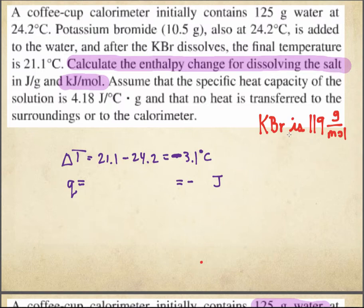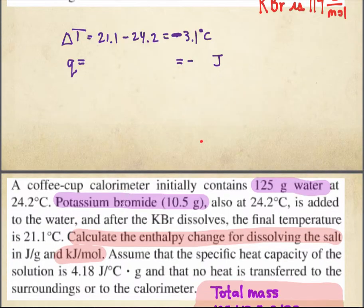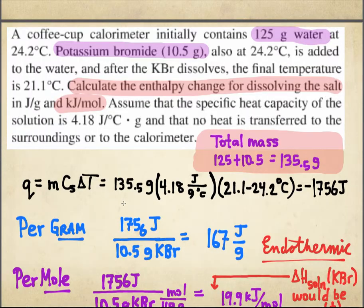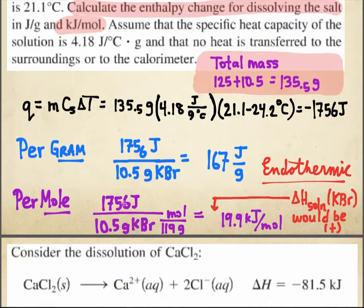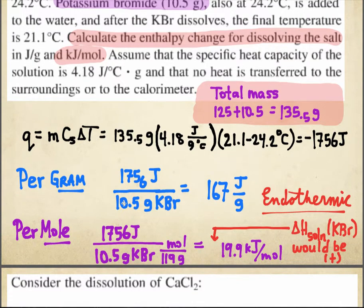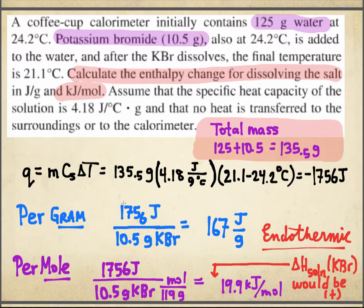But probably even more important than that, I'm going to have to use that Q equals M times C times delta T equation. Remember that one? Here we go. So Q equals M times C times delta T.